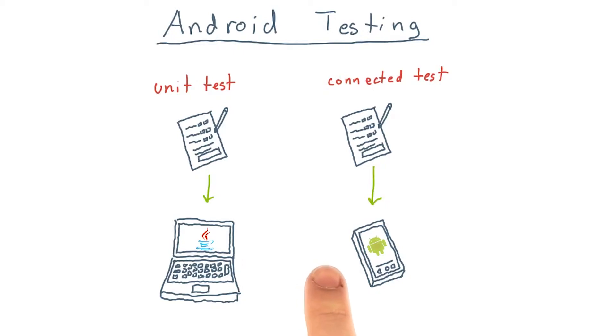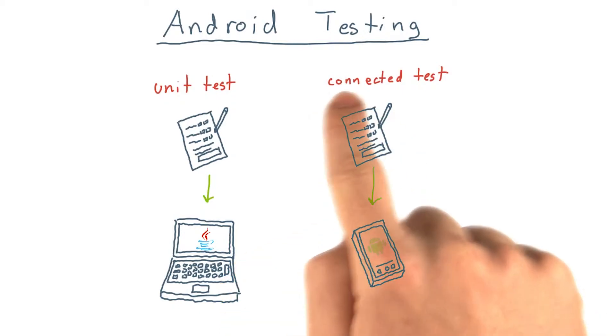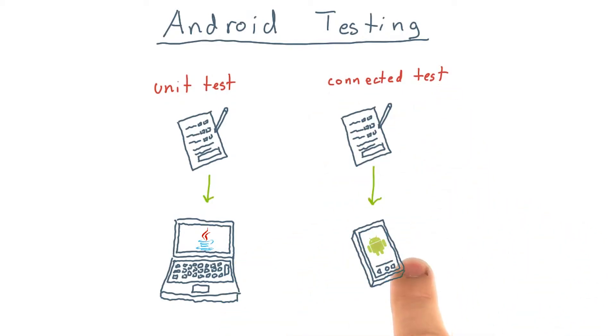There are two main types of tests you can add to your Android project: unit tests and connected tests. The primary distinction between the two is that unit tests run on a regular Java VM on your computer, and connected tests run on an Android device or emulator.